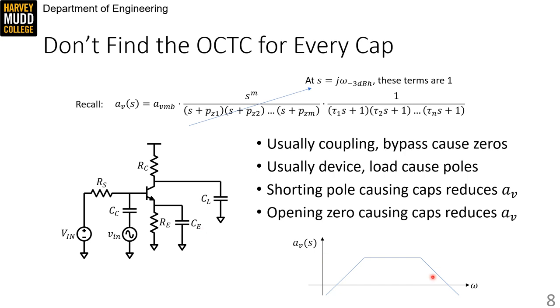So what's going to happen in the circuit as the frequency increases is that high frequency pole causing caps are going to become short. And what happens in my mid band picture is that my gain decreases. So if I look at my circuit and I replace a cap with a short and it causes my gain to drop, then I know that cap has to cause a high frequency pole.